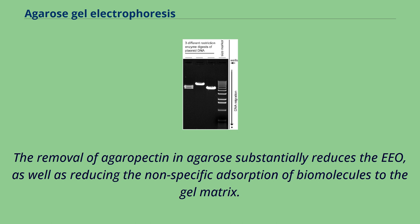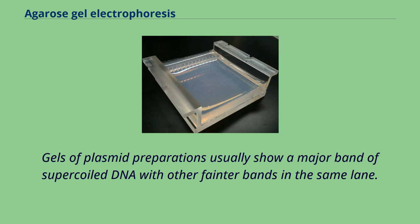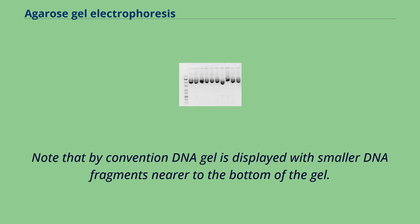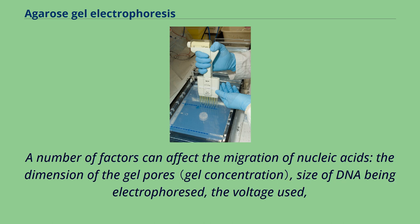For some applications such as electrophoresis of serum proteins, a high EEO may be desirable and agar pectin may be added. Gels of plasmid preparations usually show a major band of supercoiled DNA with other fainter bands in the same lane. By convention, DNA gel is displayed with smaller DNA fragments nearer to the bottom of the gel, because historically DNA gels were run vertically and smaller DNA fragments move downwards faster.